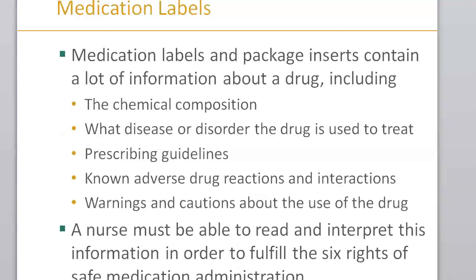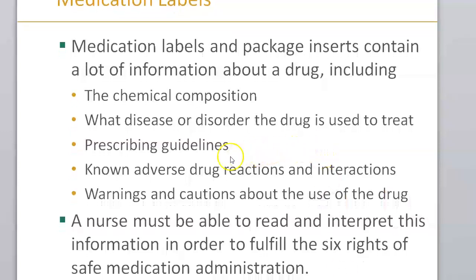First of all, it's very important to look at medication labels because they contain a lot of important information about the drug you're administering. As nurses, when you're ready to administer a medication you want to think about why the physician is ordering this medication — what is the goal? The label tells you about what disease or disorder the drug is used to treat, prescribing guidelines, adverse drug reactions, interactions, and any warnings or cautions. A nurse must be able to read and interpret this information to fulfill the six rights of safe medication administration.